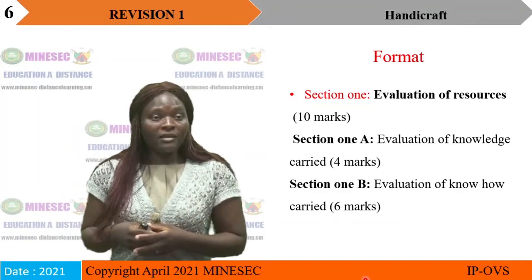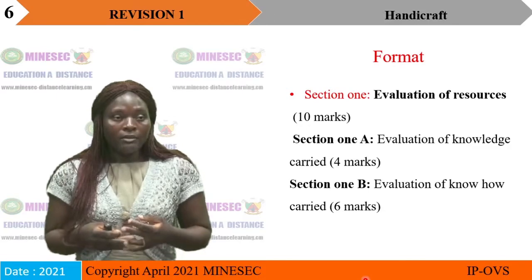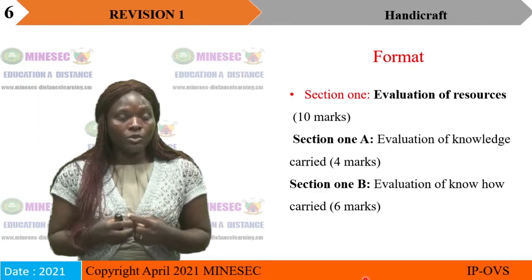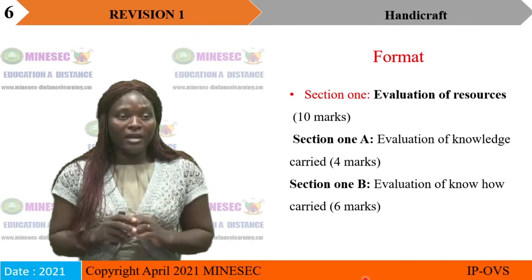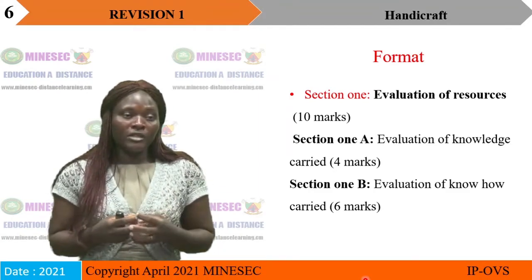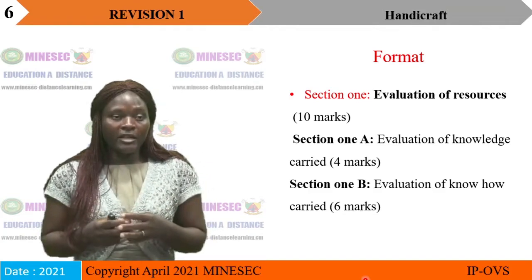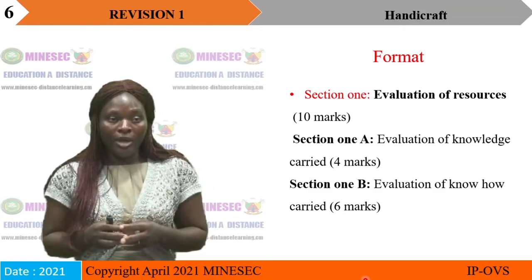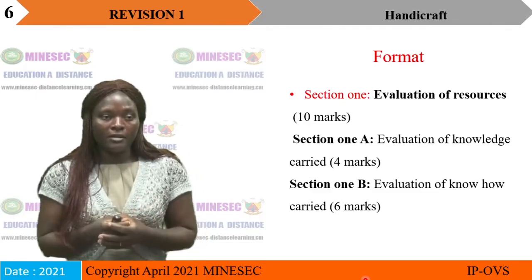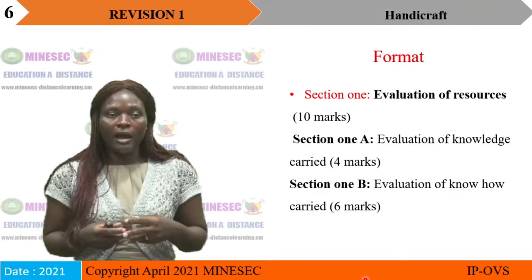Now let's look at the format — that is, the examination structure. The Probatoire manual labour for bilingual classes has three main sections. Section one evaluates resources and carries 10 marks, which is 50% of the exam, subdivided into parts A and B. Section 1A evaluates knowledge and carries four marks. Section 1B evaluates know-how and carries six marks.